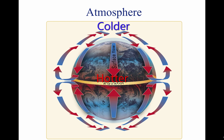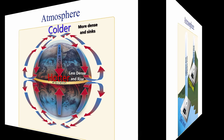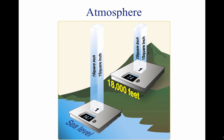Solar heating causes higher temperatures in the equatorial areas, which causes the air to be less dense and rise. As the warm air flows toward the poles, it cools, becoming denser, and sinks back toward the surface. The unequal heating of the Earth's surface not only modifies air density and creates circulation patterns, it also causes changes in air pressure, or the force exerted by the weight of air molecules.